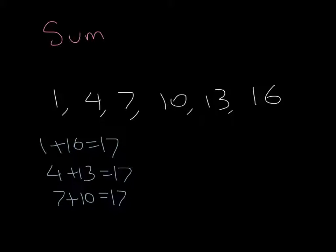is just whatever this constant number is times the number of pairs. In this case, we have three pairs of numbers, so our sum is equal to 17 times 3, or 51.